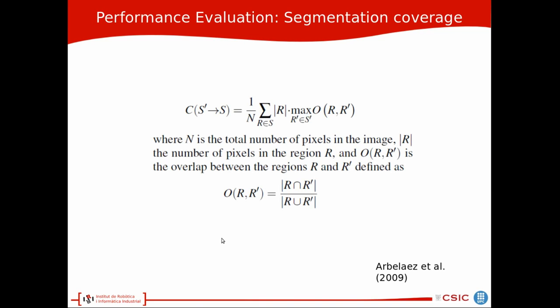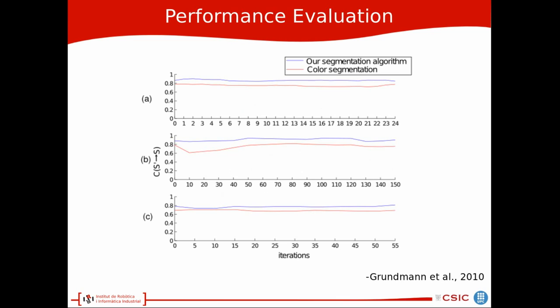In order to evaluate our performance we use a segment covering metric proposed earlier. This segment covering metric determines the percentage of overlap between the ground truth labeling and the labeling that we get using our algorithm. So it basically tells about the percentage of correct segmentation. A hundred percent means a perfect segmentation. And we use this segment covering metric to test our three different videos and the blue line gives the segment covering metric using our segmentation algorithm and the red gives the segment covering metric using a color based segmenter. And we can see that our algorithm performed better.